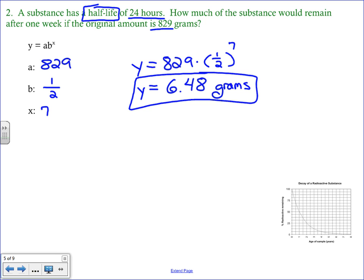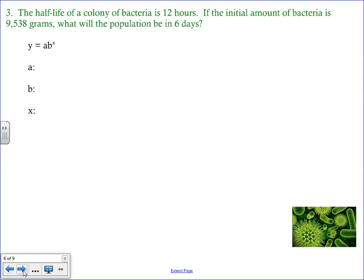Let's look at another example that deals with half-life. This one says the half-life of a colony of bacteria is 12 hours. If the initial amount of bacteria is 9538 grams, what will the population be in six days? So circle that word half-life. That automatically gives you your multiplier. The initial amount, remember I said the word initial is the same as starting. So that's going to be our A, 9538. And then our X. This is always going to be the tricky part. We have to figure out how many half-life periods there are in six days.